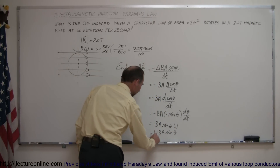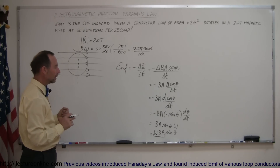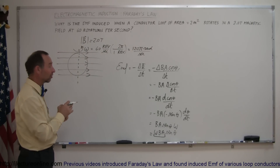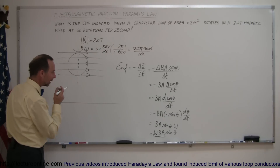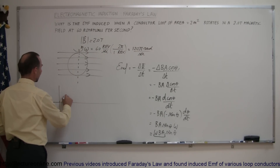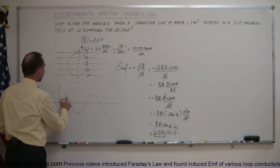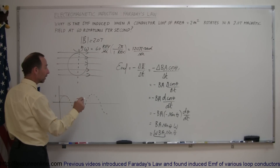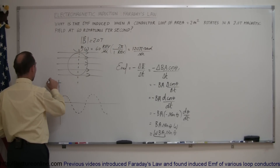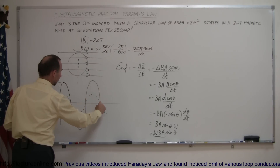This expression has a constant portion and a varying portion. The constant portion is omega times B times A — how fast the loop rotates, the strength of the B field, and the area of the loop. The changing part is the sine of theta. Graphing this, when theta is 0, sine of theta is 0. The sine of theta curve then reaches a maximum of 1 at 90 degrees, so the EMF equals omega·B·A at its peak, and then varies periodically — positive, zero, negative, zero — as the loop keeps rotating.